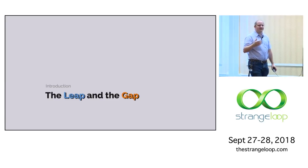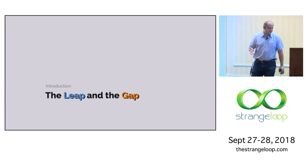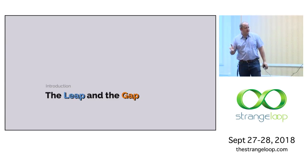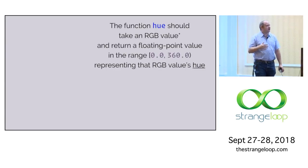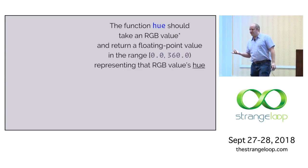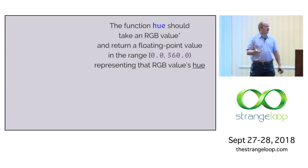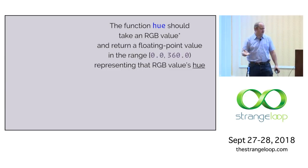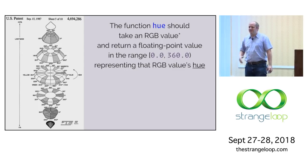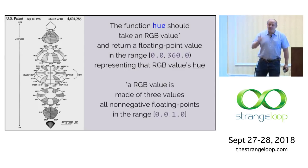I'm calling these two ideas the leap and the gap. The example I've modified a little bit from his talk is the notion of a function, hue, that takes a red, green, blue value and returns a floating point value in the range between 0 and 365 that represents the RGB value's hue. Hue is a measure of degree in a polar coordinate system, which I didn't know before I wrote this talk.